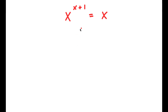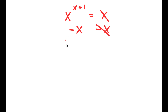In this problem, I have x to the power of x plus 1 is equal to x. To solve this, I'm going to start by subtracting x on both sides. So these two cancel out, and I'm left with x to the power of x plus 1 minus x is equal to 0.